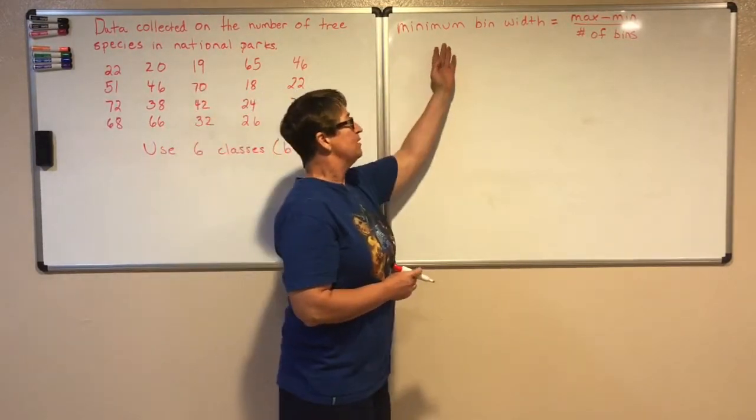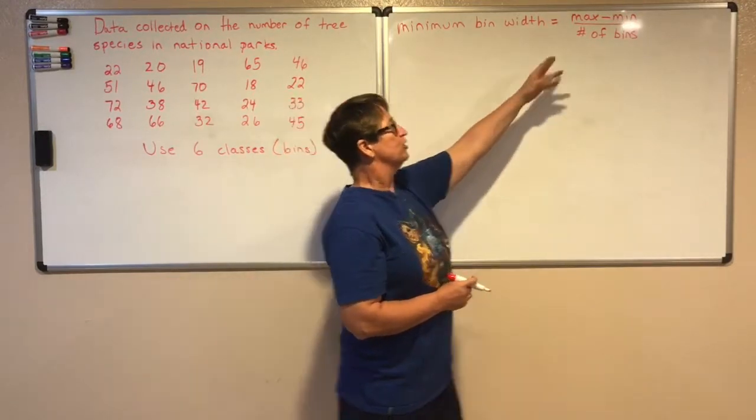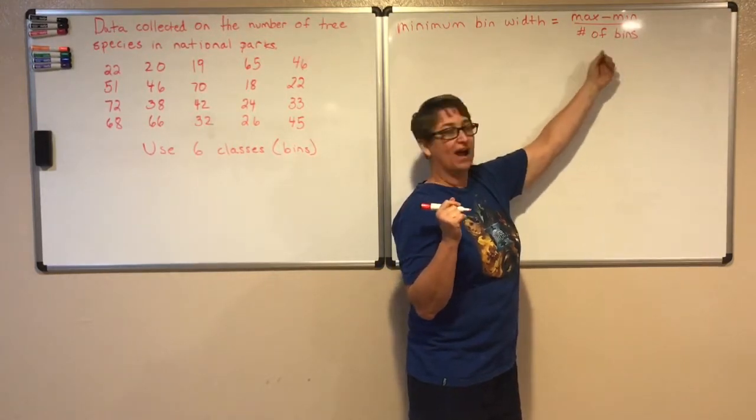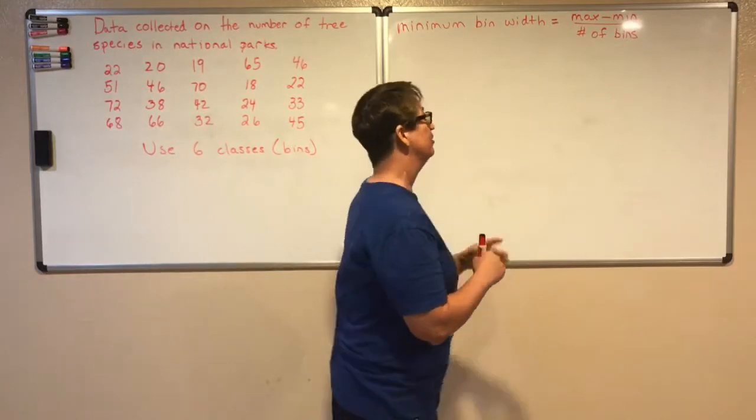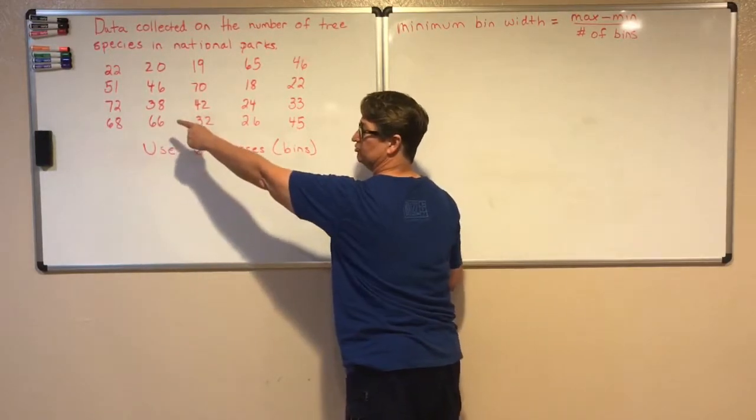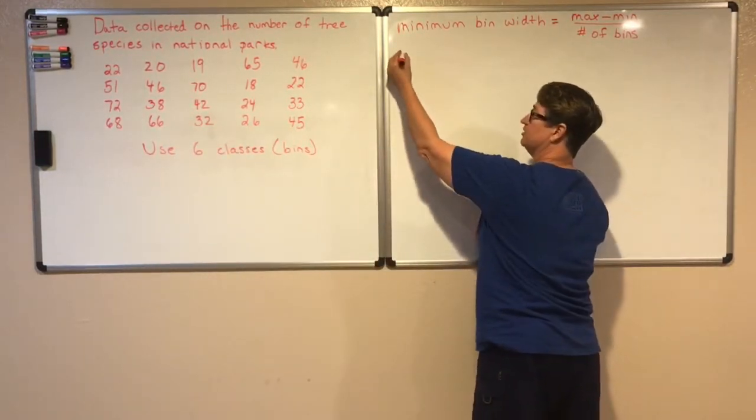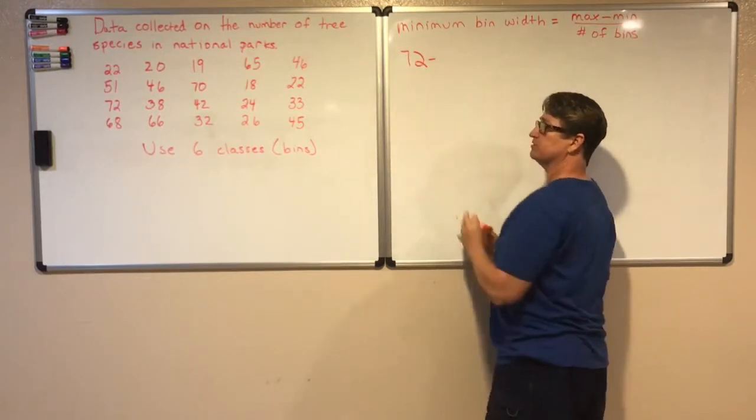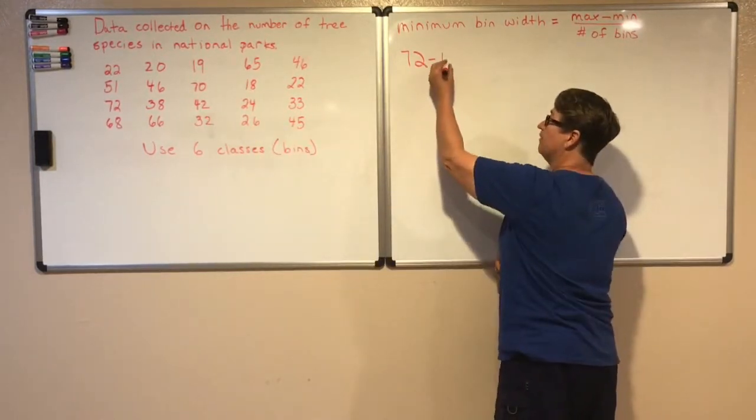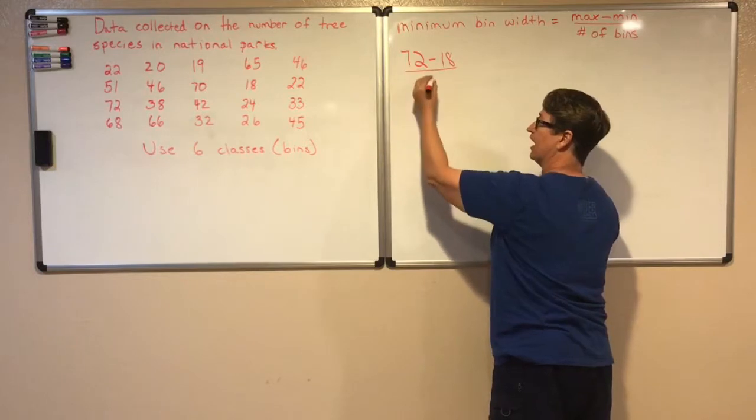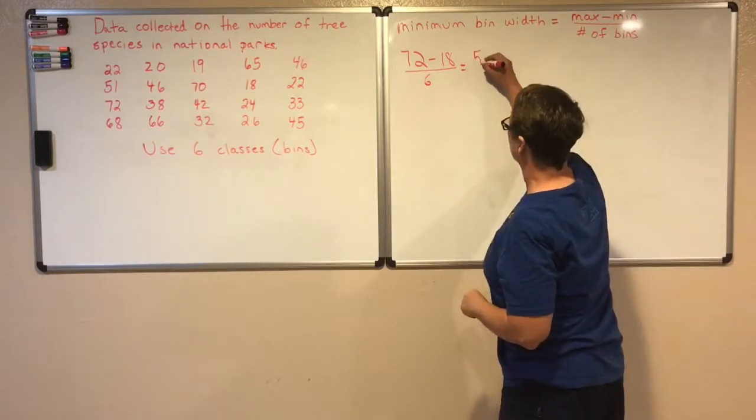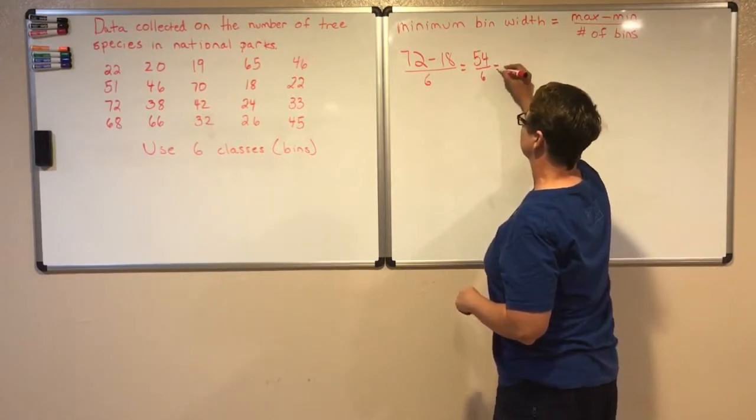Now to find our minimum bin width we're going to take our maximum data value and subtract our minimum data value and divide that by the number of bins that we have. So in this case our maximum value is 72. I'm going to take that 72 and subtract our minimum value which is 18 and then divide that by the number of bins I have which is six. So 72 minus 18 is 54 divided by six gives me nine.